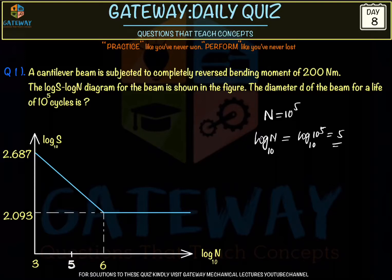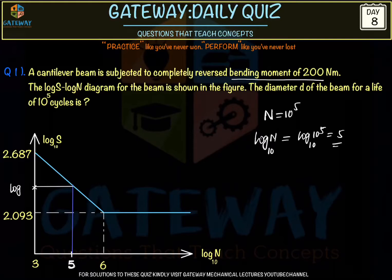We draw a vertical line at log N = 5, meeting the curve at a point. At that point we calculate the value of S — the bending stress — denoted as S′. So we need to calculate log S′ (base 10) at 10^5 cycles. We can solve this using similar triangles or interpolation; since it's a visual diagram problem, we'll use similar triangles.